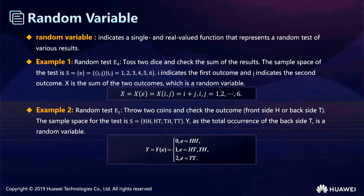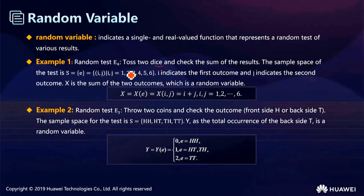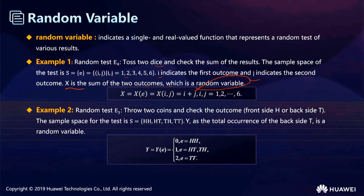Here are random variables. A random variable represents the outcome of a random test, and it is a single real-valued function. There are two examples. In random test E4, we throw two dice and check the sum of the results. The sample space is pairs (i, j) where i indicates the first outcome and j indicates the second outcome. X is the sum of the two results, so the random variable X takes values 0, 1, 2, 3. For tossing two coins and checking the output, the sample space may be HH, HT, TH, TT.